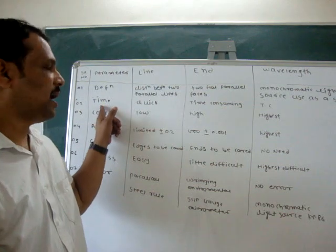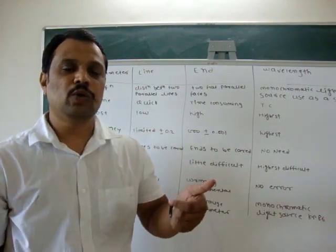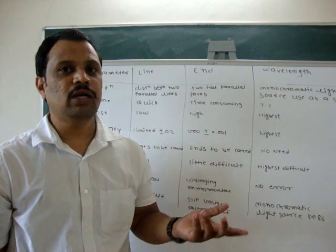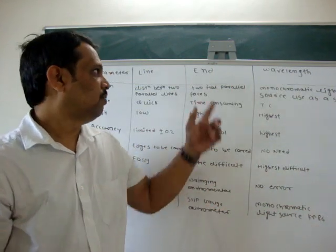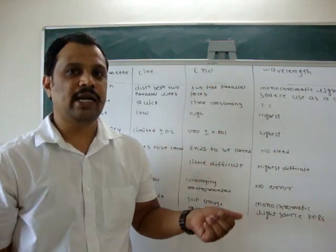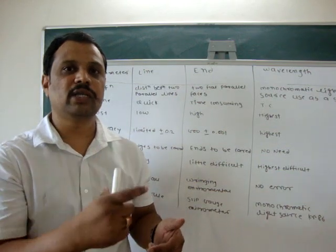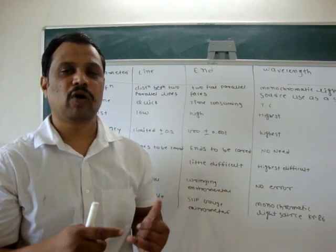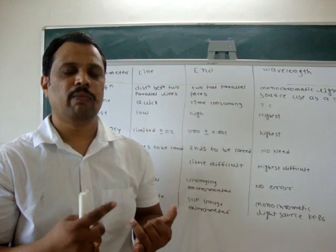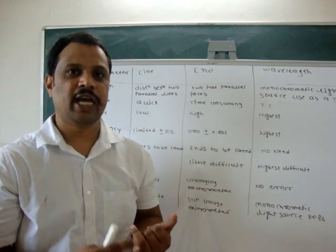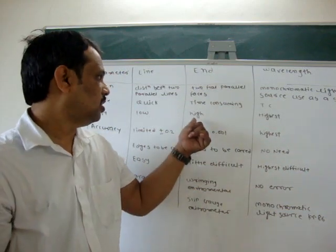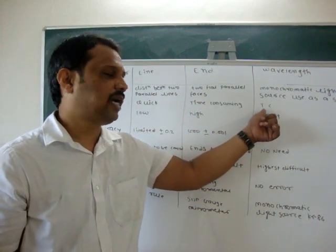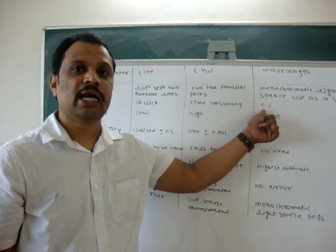Second point is time. By using a steel rule, you can easily and quickly measure distance. But when end standard comes — when you measure distance using a vernier — it takes time because you have to take calculations: main scale reading and vernier scale reading. So it is time-consuming. And in wavelength standard also, it is time-consuming.